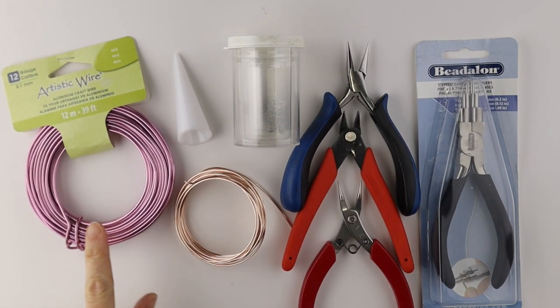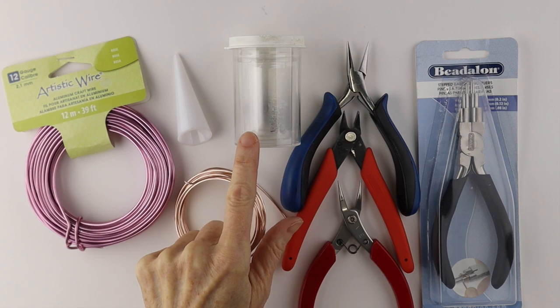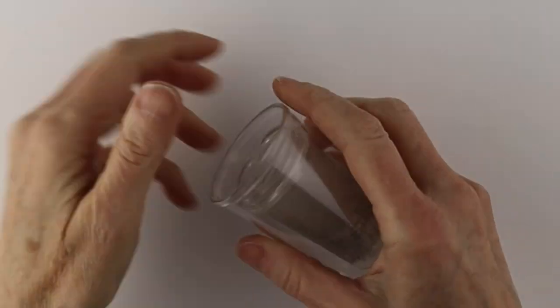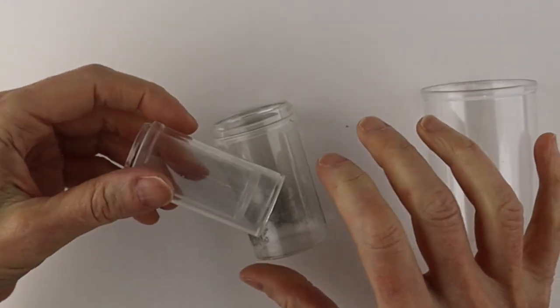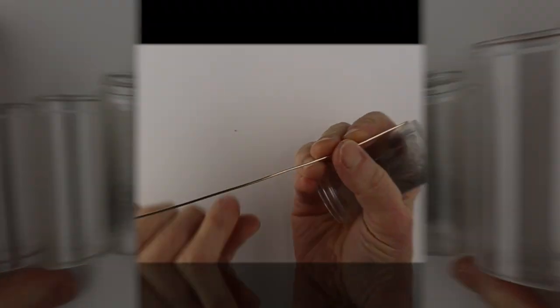I'm using 12 gauge aluminum wire, 16 gauge copper wire, my tools. I have the bead along looping pliers. I have some round forms and a cone, so these are my little pill bottles. I call them my babushka dolls to get all the different round forms.